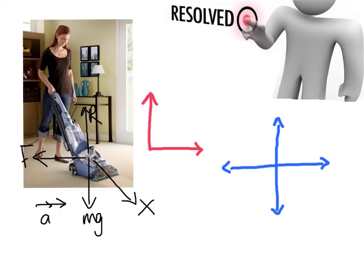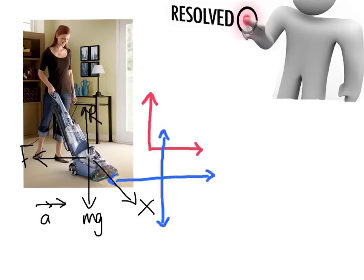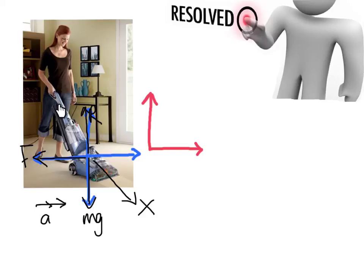This is where it gets difficult with the hoover head. This is the force diagram that we set up before, and the problem is when we put our axes on top we've got this diagonal force — the x — the push from the hoover, which we don't draw going into the particle; we draw it coming out of the particle like this. That force is not underneath the blue line, so we need to resolve it.